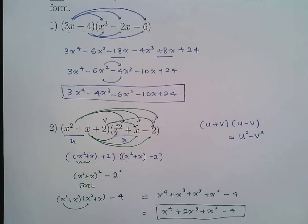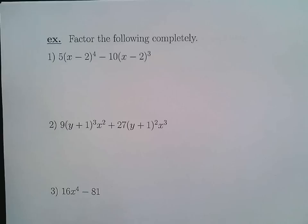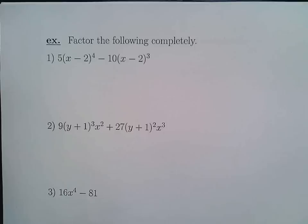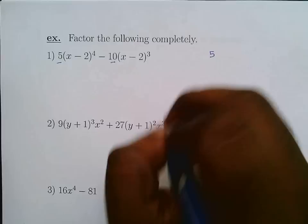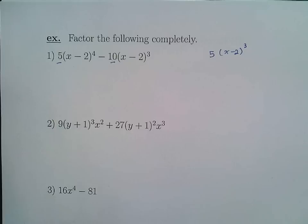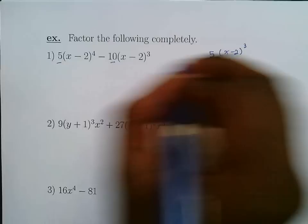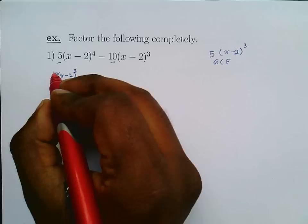Let's see how we factor. Look at the common factors and pick the least exponent. Here we have coefficients 5 and 10 — the GCF is 5. For (x - 2)⁴ and (x - 2)³, we pick the least exponent, which is (x - 2)³. Write the GCF out front and then determine what's remaining from each original term.